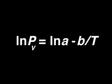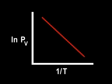When we take the natural log of both sides, we obtain this equation. It tells us that a graph of log vapor pressure versus the reciprocal of the absolute temperature should be a straight line.